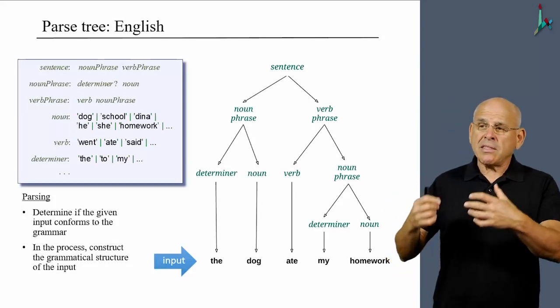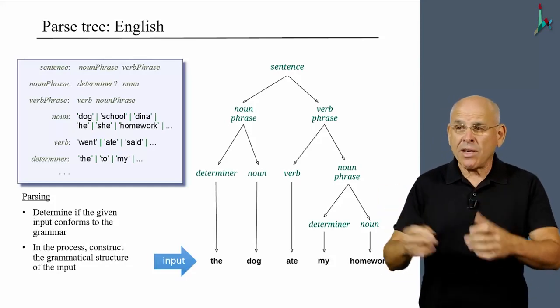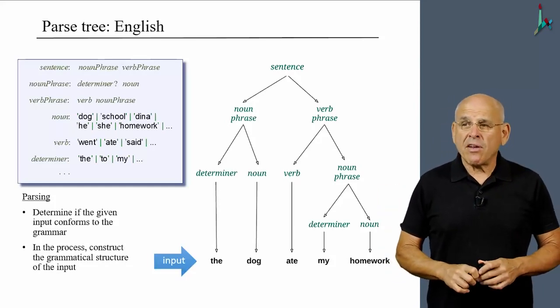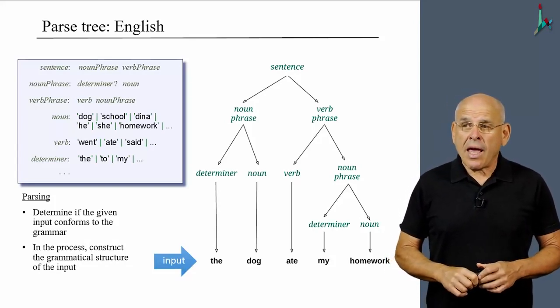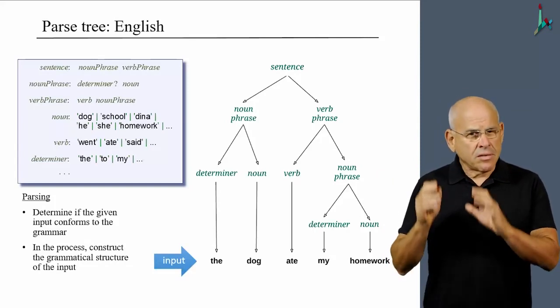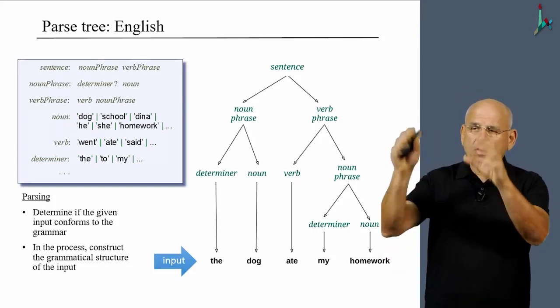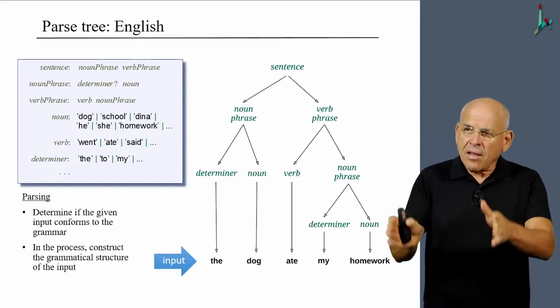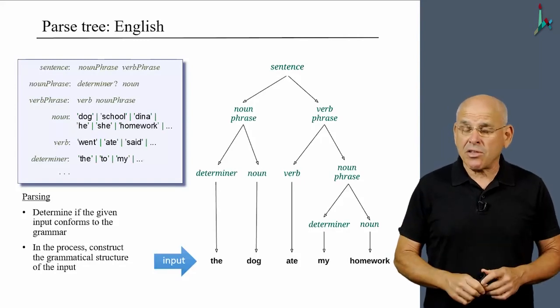This is the grammatical structure of this given input. As you see, it is recorded using something which in computational linguistics is referred to as a parse tree. A tree is a very classical data structure in computer science that begins with a root and then branches into subtrees and so on and so forth. It's a recursive structure.